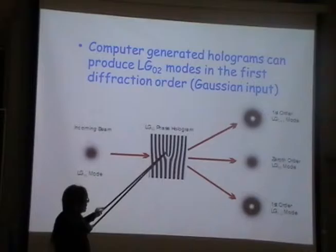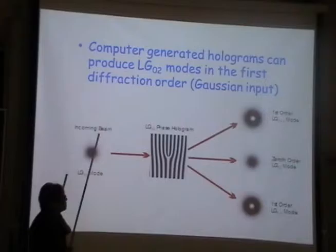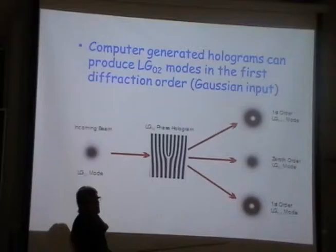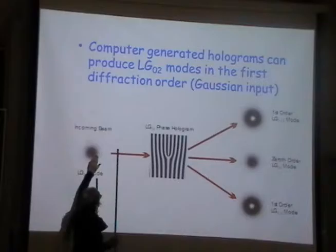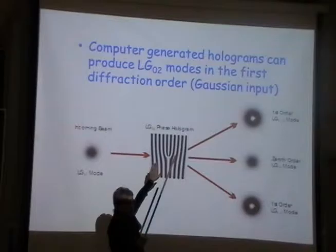If this is purely a Gaussian beam through a purely LG02 hologram, there will be no higher orders — no residual orders to the sides. Now, if I take the LG0+2 mode from the first transmission and put it onto another LG02 hologram, straight through I get the same mode, but to the sides I get Gaussian downwards and LG04 upwards.